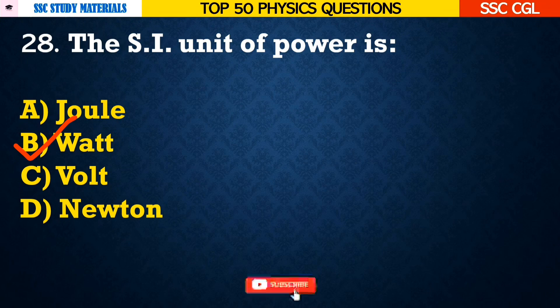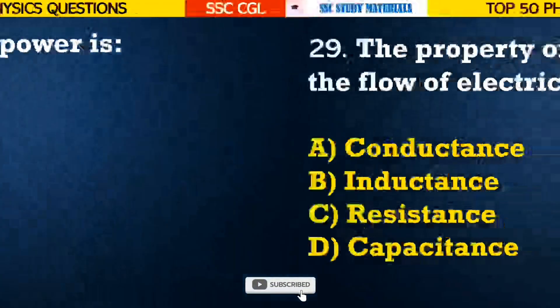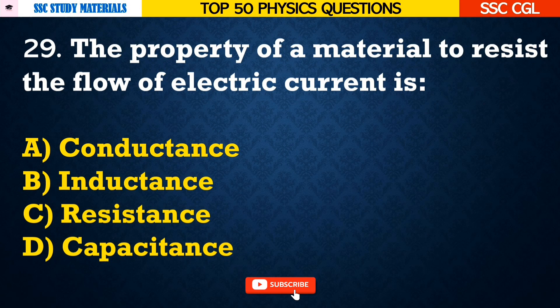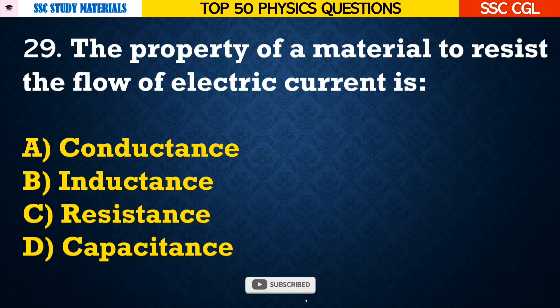Question number 29: The property of a material to resist the flow of electric current is — Answer C. Resistance.